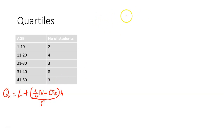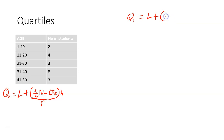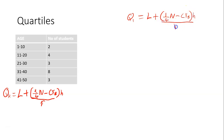To find the first quartile Q1, we are going to use L plus into brackets 1 over 4 — since we say first quartile, 1 over 4. So it's 1 over 4 times N minus CFB times H divided by F.